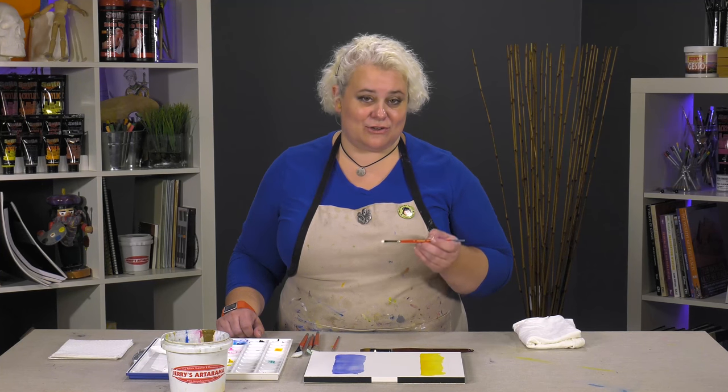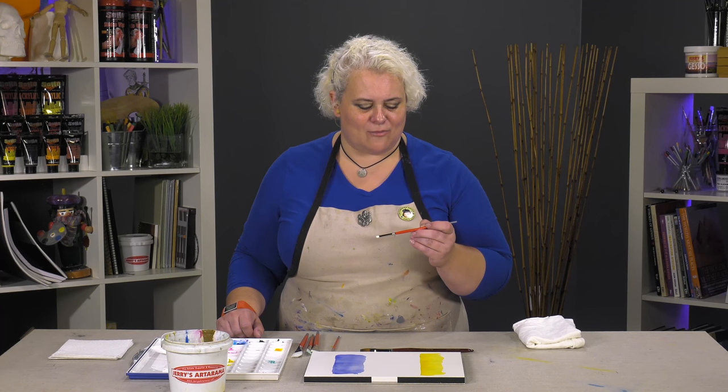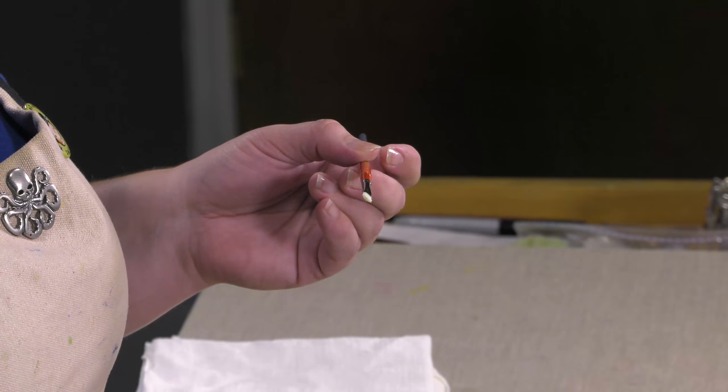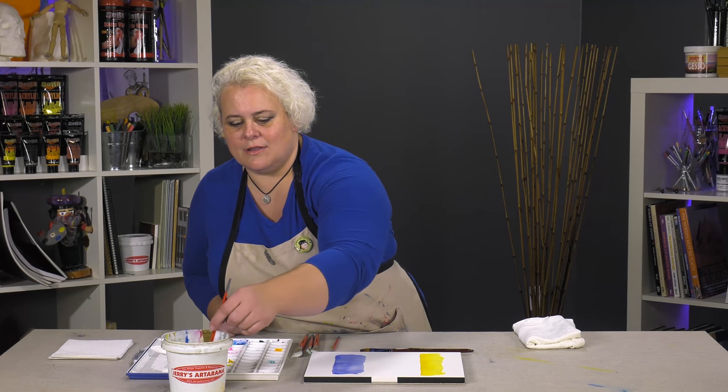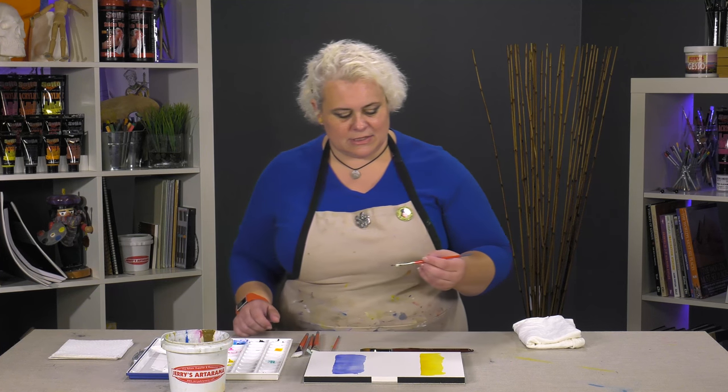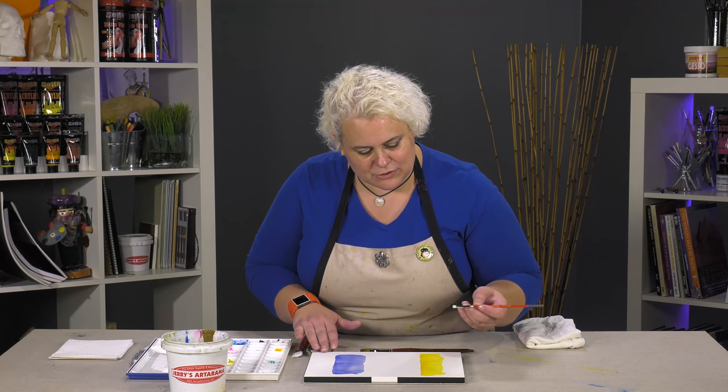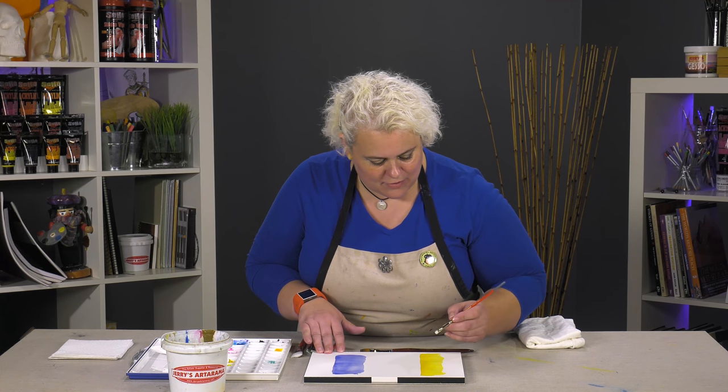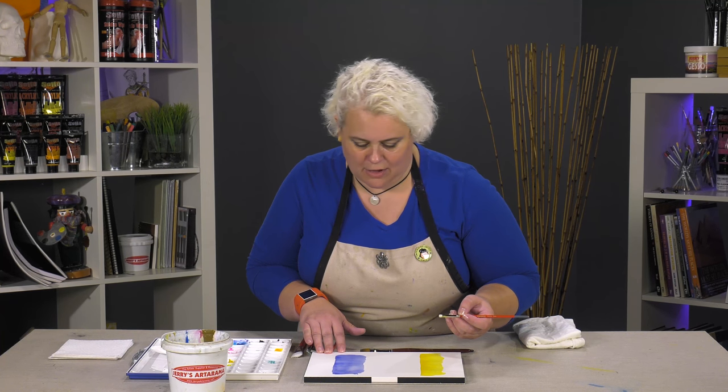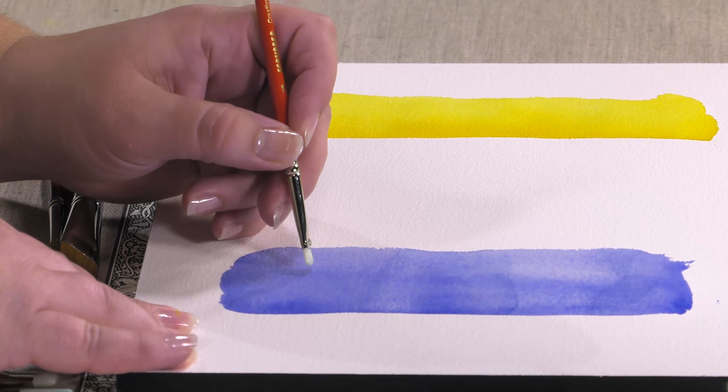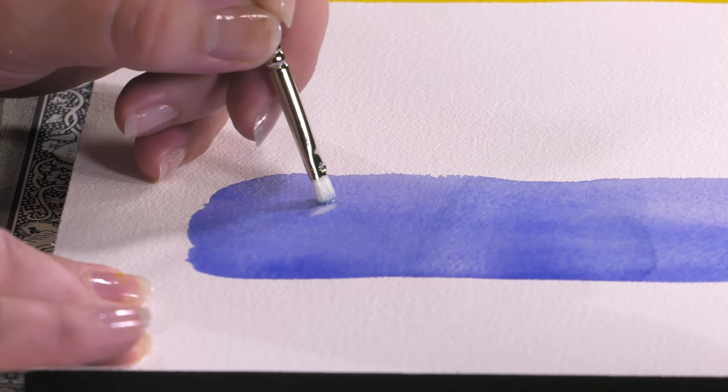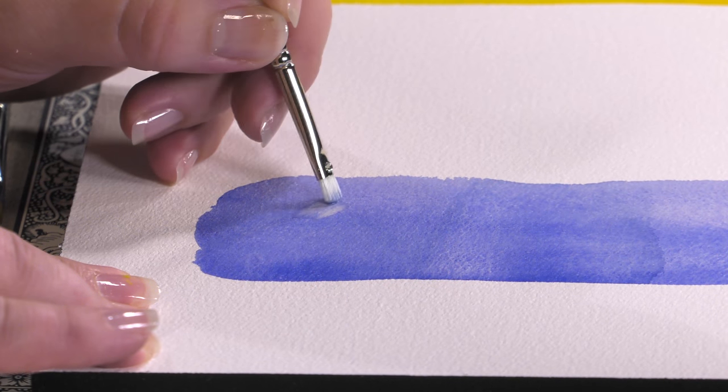Hey, today we're here to go over the Creative Mark scrubber brushes for watercolor and give you a demo on how these work. Scrubber brushes are all stiff nylon and help you scrub color out of an area that you don't want it to be in. This is a filbert, so it's rounded on the edges and is going to do a small area.